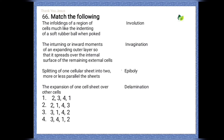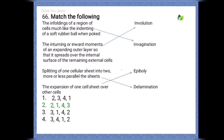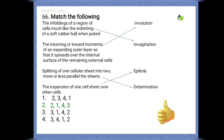Match list 1 with list 2 for gastrulation movements: infoldings of a region of cells, like indenting a soft rubber ball when poked, is invagination. The inward movement of an expanding outer layer spreading over the internal surface of remaining external cells is involution. Splitting of one cellular sheet into two parallel sheets is delamination. The expansion of one cell sheet over other cells is epiboly.